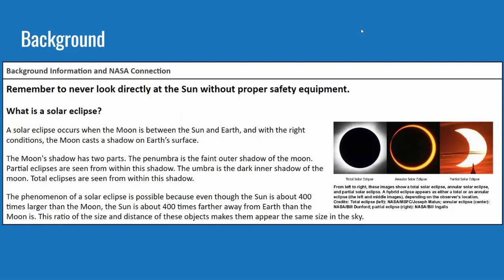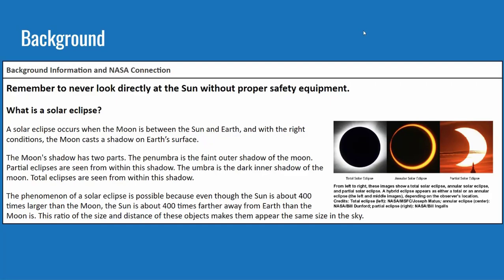There's background information for the teacher so they can learn a little bit more about the topic. We have a couple of pages of background information about solar eclipses, why NASA studies them, how to safely observe them, and also a map so you can find the location of where you would be during the 2024 total eclipse on April 8th.